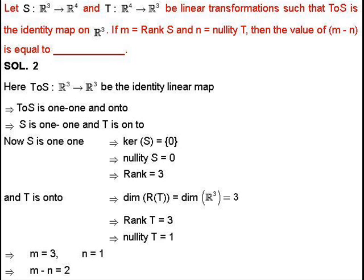Our next question: S and T are two linear transformations. S maps R³ to R⁴ and T maps R⁴ to R³. The composite map T∘S maps R³ to R³ and is given to be the identity map. Every identity map is bijective, so T∘S is bijective — that is, one-to-one and onto. We know if T∘S is one-to-one and onto, then S is always one-to-one. Therefore, the kernel of S contains only 0, meaning nullity of S equals 0.